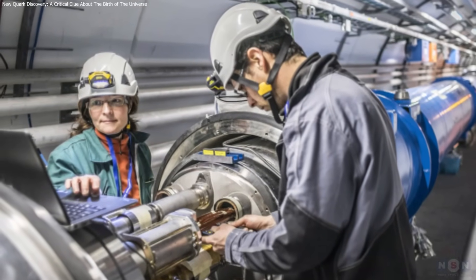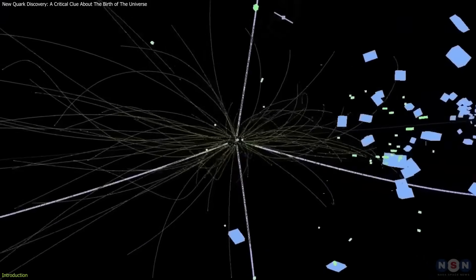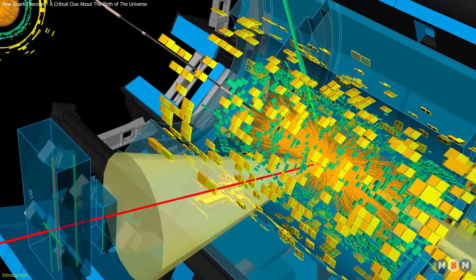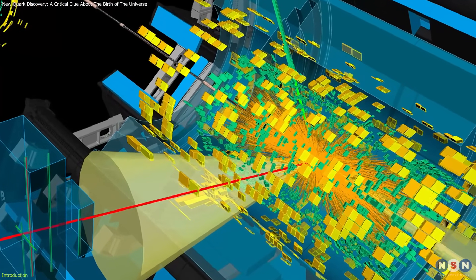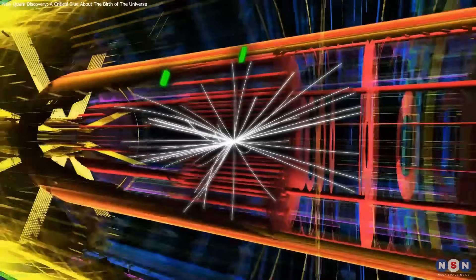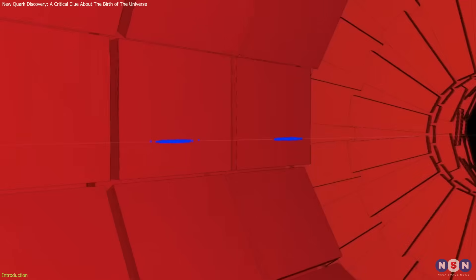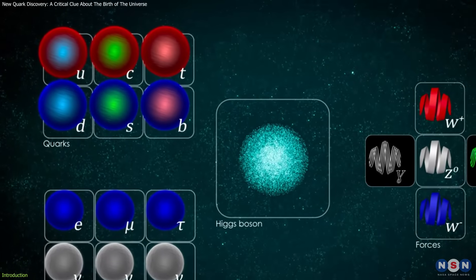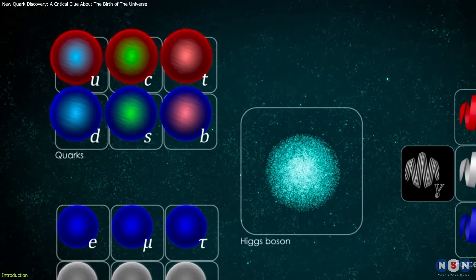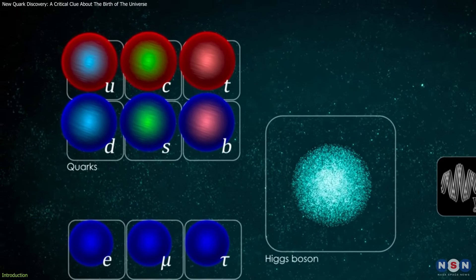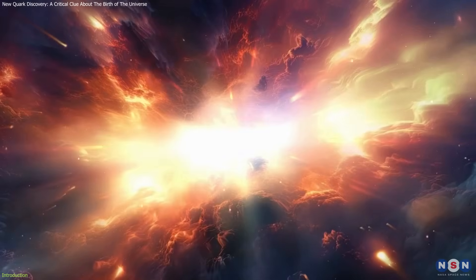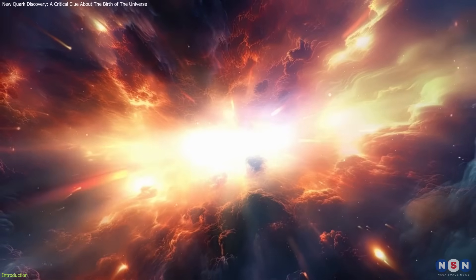Scientists at the Large Hadron Collider have just detected something remarkable: a pair of top quarks in the aftermath of colliding lead atoms. This isn't just another particle physics finding—it's the first time this specific quark-antiquark pair has been observed in a heavy ion collision. More importantly, it provides compelling evidence that all six quark flavors existed during the universe's very first microseconds, swimming in the primordial quark-gluon plasma.